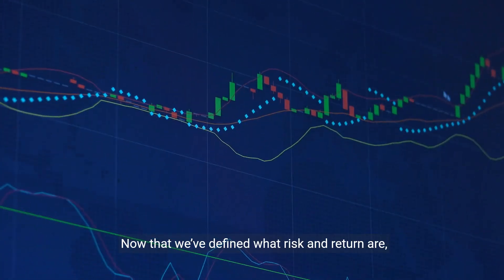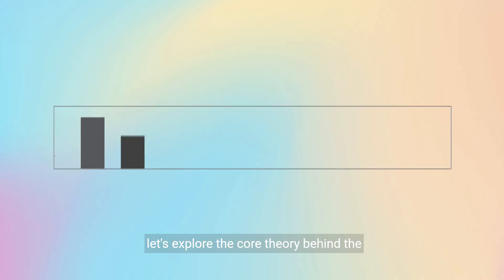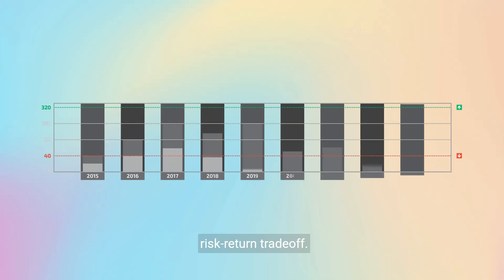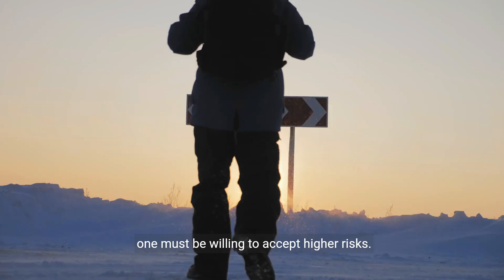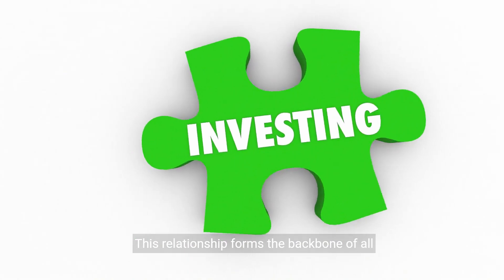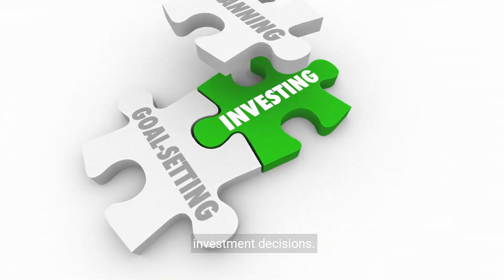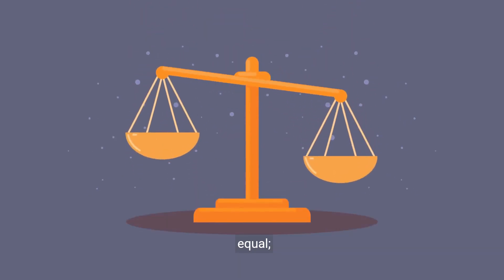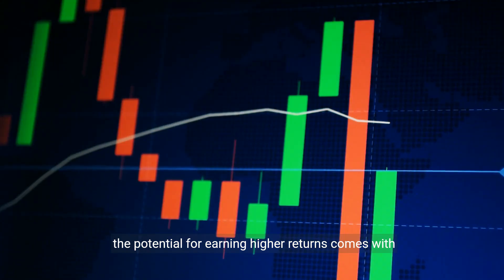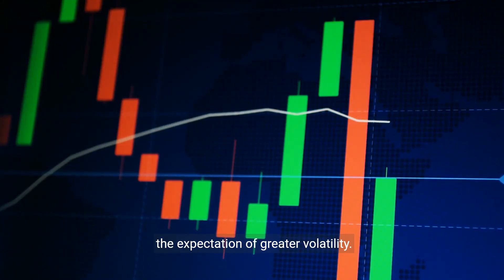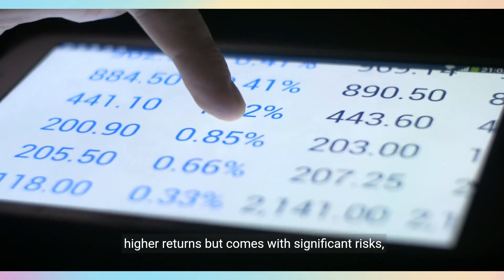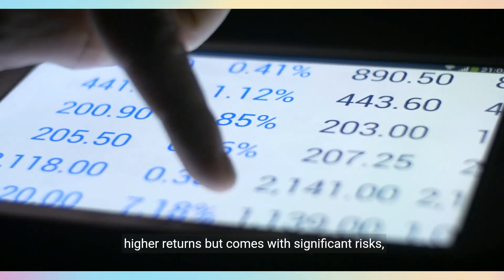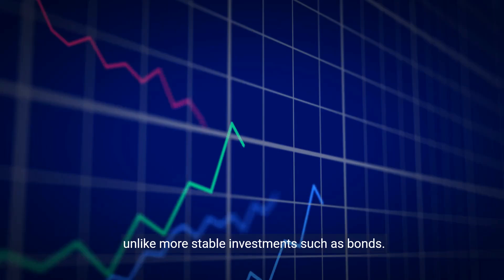Now that we've defined what risk and return are, let's explore the core theory behind the risk-return trade-off. This principle suggests that to achieve higher returns, one must be willing to accept higher risks. This relationship forms the backbone of all investment decisions. Investment theory teaches us that not all risks are equal. The potential for earning higher returns comes with the expectation of greater volatility. For example, investing in stocks often offers higher returns but comes with significant risks, unlike more stable investments such as bonds.